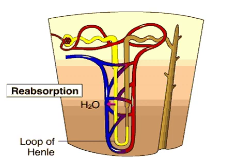In the ascending loop, the surrounding fluid becomes more dilute. This portion of the loop is impermeable to water but not sodium chloride. Sodium chloride diffuses out, lowering the solute concentration of the filtrate and adding to the solute concentration of the surrounding fluid.